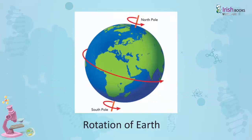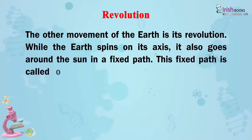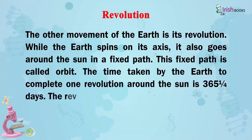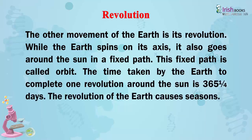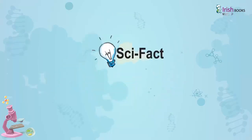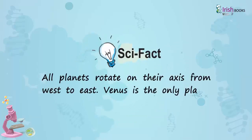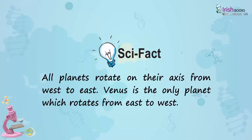Revolution. The other movement of the earth is its revolution. While the earth spins on its axis, it also goes around the sun in a fixed path. This fixed path is called the orbit. The time taken by the earth to complete one revolution around the sun is 365 and one-fourth days. The revolution of the earth causes seasons. Scientific Fact: all planets rotate on their axis from west to east. Venus is the only planet which rotates from east to west.